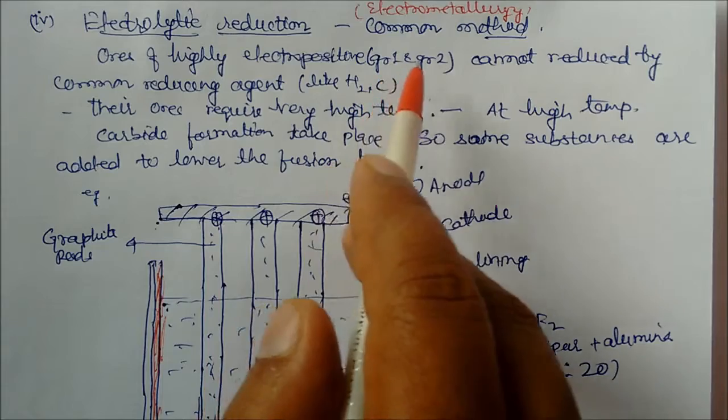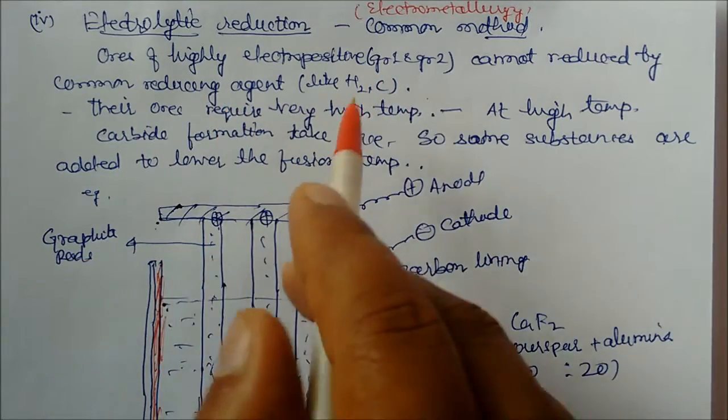Highly electropositive like Group 1, Group 2 metals cannot be reduced by common reducing method like hydrogen and carbon.